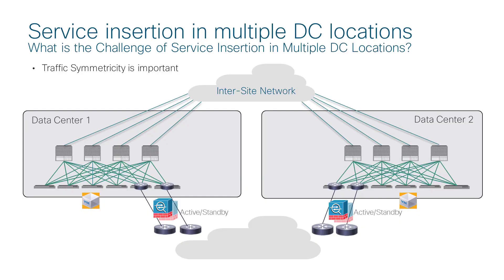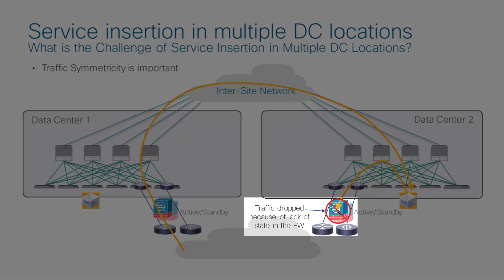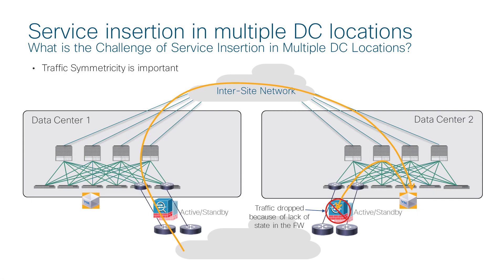Speaking of multi-location datacenters, what are the design considerations for L4-L7 services? The key point is how to keep traffic symmetric. Imagine datacenter location 1 and datacenter location 2 having the same subnets stretched across locations. Incoming traffic comes to one location depending on routing design, and the actual destination could be in a different location. For return traffic, it's likely going to the local external connection instead of where traffic came from. If an independent firewall is connected to each location, the firewall in location 2 will drop traffic because it didn't see the incoming traffic.